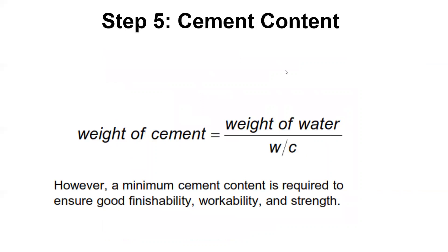Step five: cement content. The weight of the cement equals the weight of the water divided by the water-cement ratio. So from step three, say we had 325 pounds of water, and from step four we found 0.57 — you divide those to get the cement weight. The water weight is the numerator from step three, and the W/C ratio from step four is the denominator. That's how you calculate the cement content.